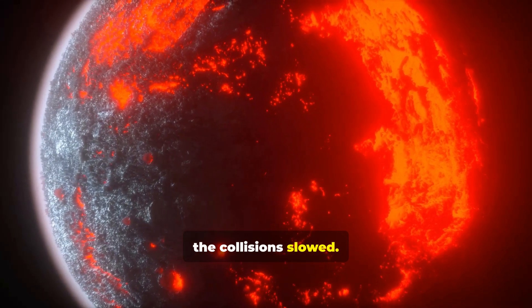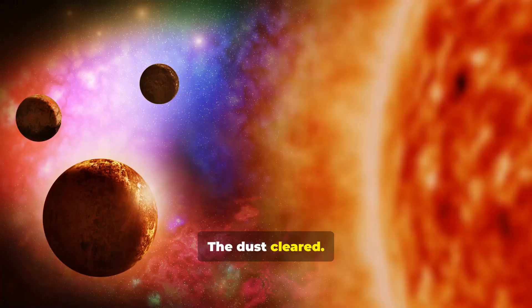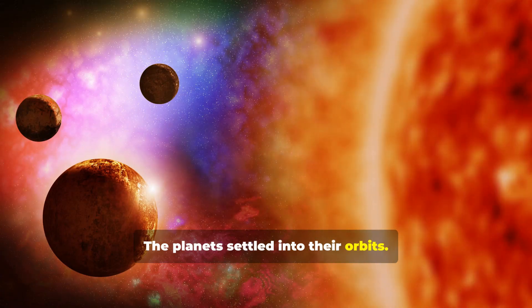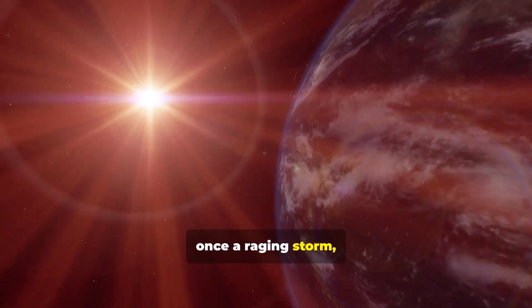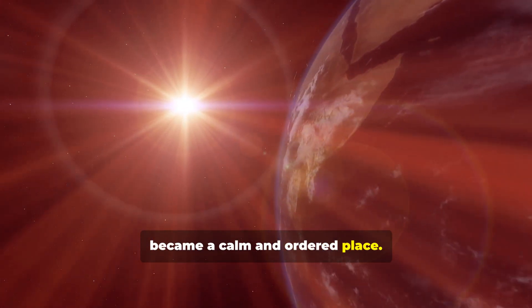As time went on, the collisions slowed. The dust cleared. The planets settled into their orbits. The solar system, once a raging storm, became a calm and ordered place.